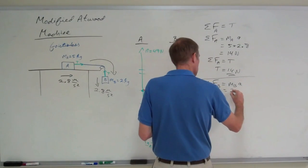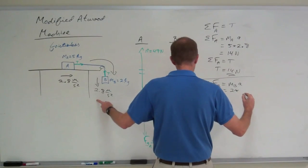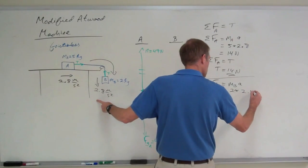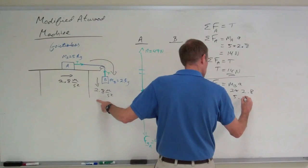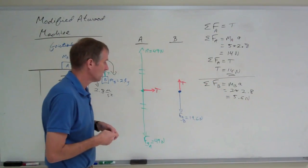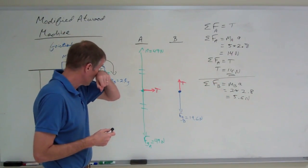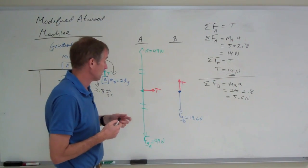which is two kilograms times an acceleration of 2.8, which is 5.6 newtons, I think. And what is the net force acting on block B?